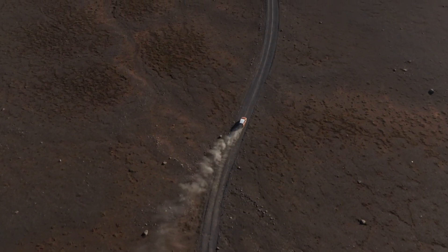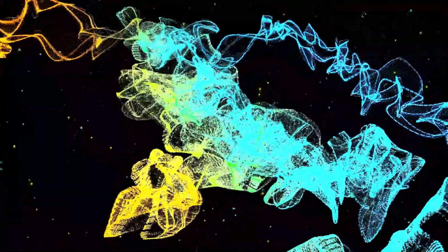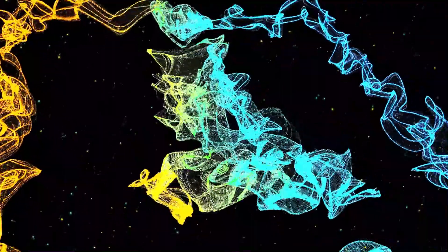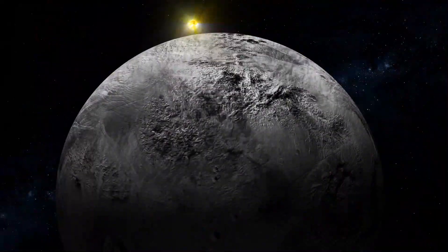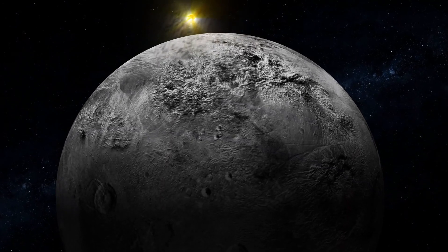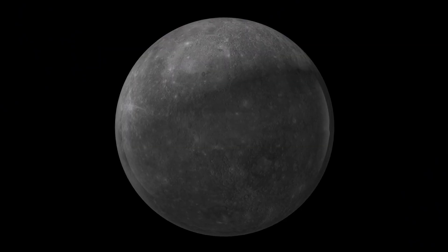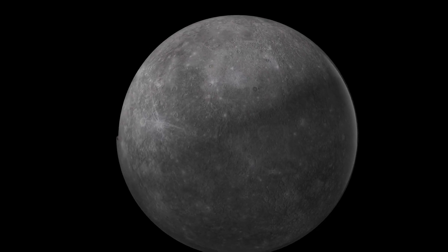Uranus is also home to 27 known moons, many named after characters from Shakespeare and Alexander Pope. Its largest moons, such as Titania, Oberon, and Miranda, are icy worlds with varied terrains, including massive cliffs, ridges, and valleys. Miranda, in particular, stands out with its chaotic patchwork-like surface, hinting at a violent past.